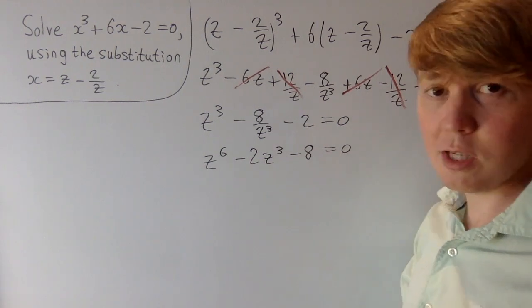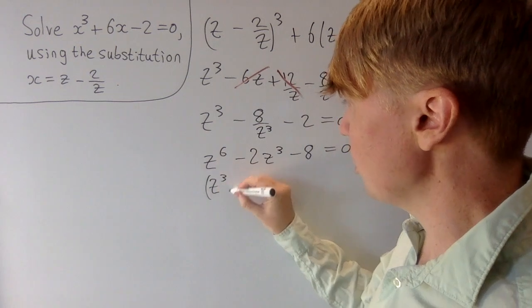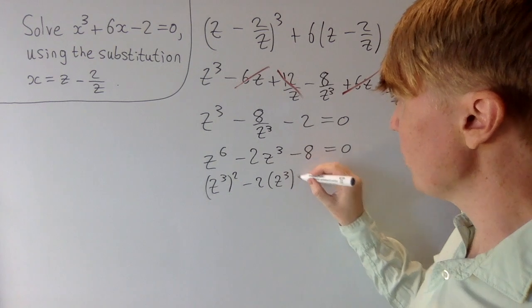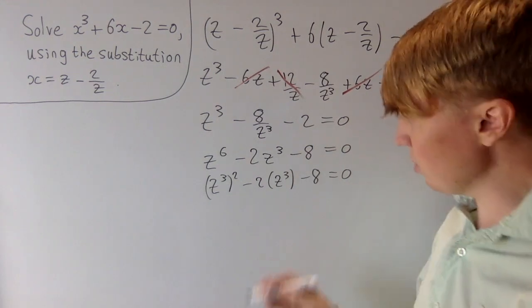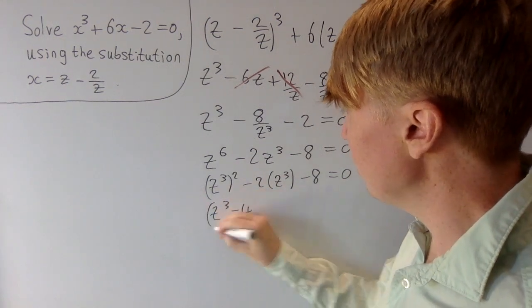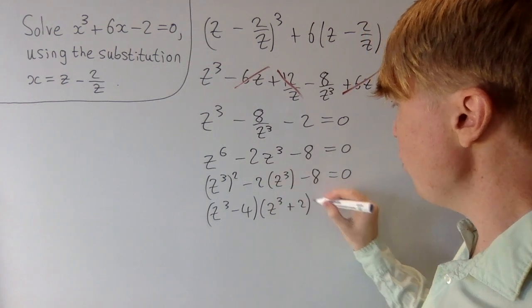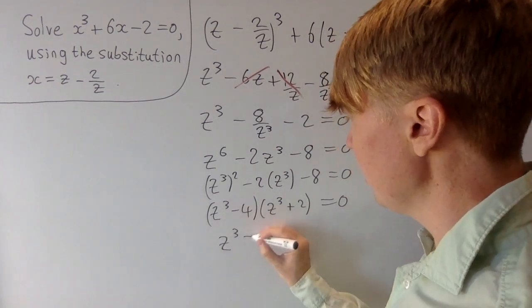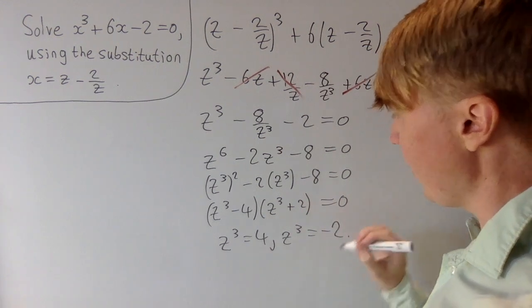It might not look like we've simplified things very much, but this is actually a quadratic in z cubed. We can write z to the 6 as (z cubed) squared minus 2z cubed minus 8 equals 0. This is something we can just factorise: we get (z cubed minus 4)(z cubed plus 2) equals 0. So our solutions satisfy z cubed equals 4, and z cubed equals minus 2.